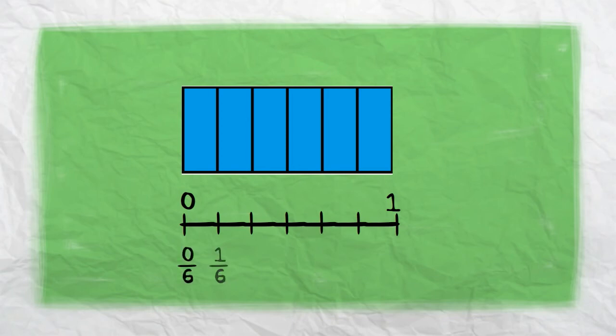As we move closer to the one, our numerator increases until we get to six sixths, which equals one whole.